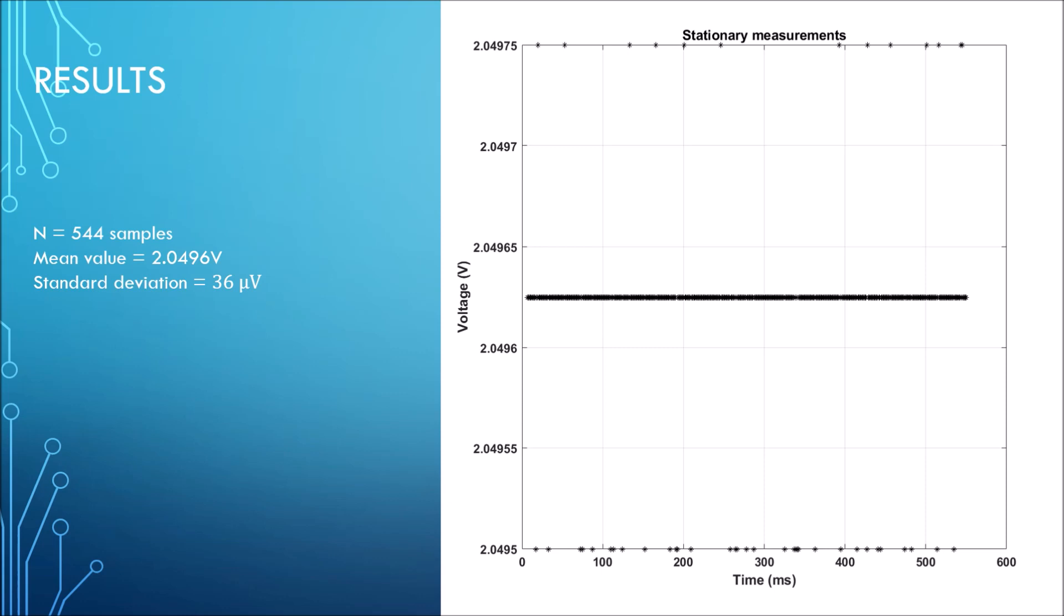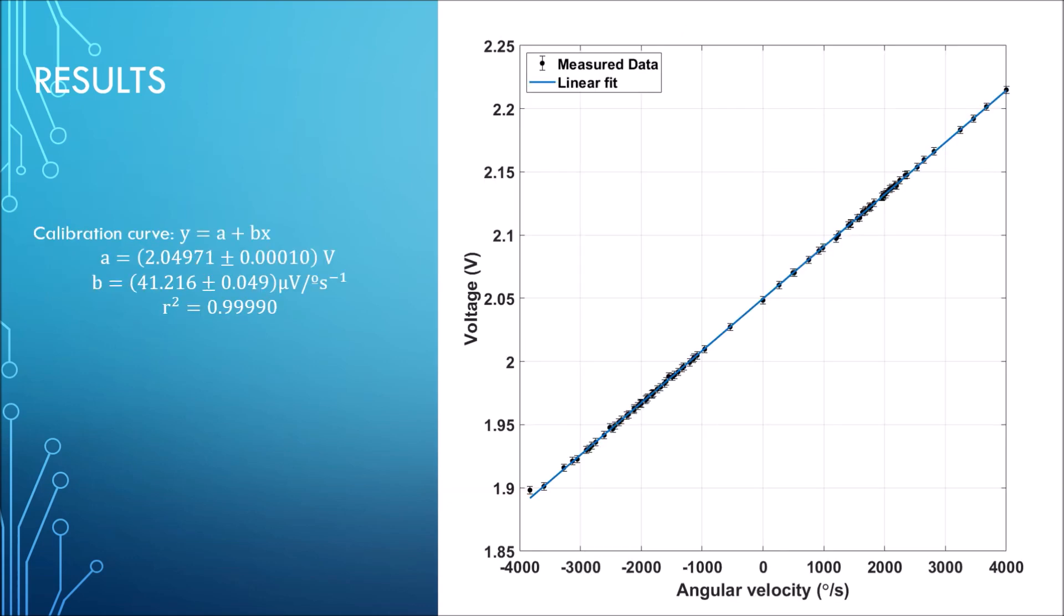These are the results. I'm very happy because I'm using Rocket to power the device, and Rocket has a switching regulator which is known to be noisy. Yet when I have the gyroscope stationary and take 544 samples, I get a noise level of only 36 microvolts, which is excellent.